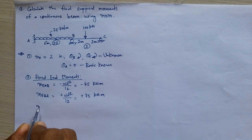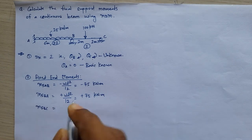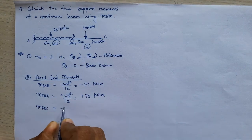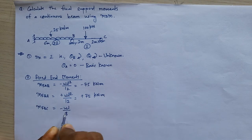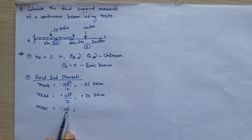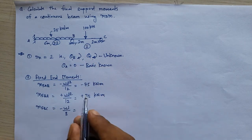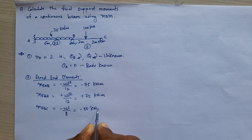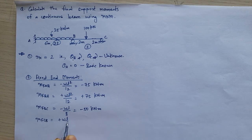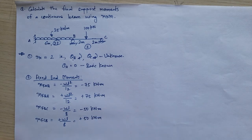For the next member, MF_BC has a point load at the centre, so the fixed end moment equals minus WL divided by 8. W is 100 and length is 4, so 100 into 4 divided by 8 gives 50 kilo Newton meters — negative since the restoring moment is anti-clockwise in nature. And MF_CB equals plus WL divided by 8, giving plus 50 kilo Newton meters. So these are the four fixed end moment values.